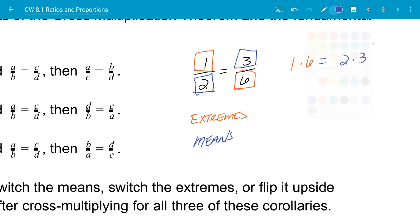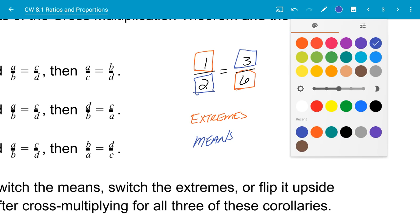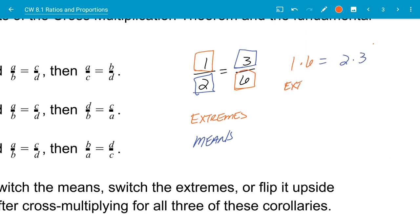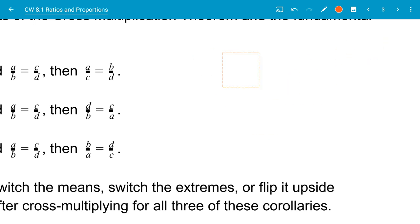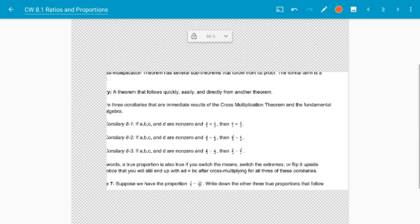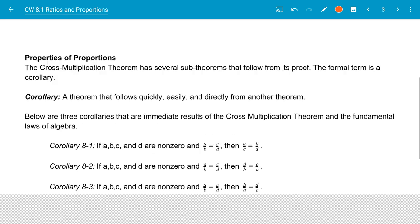And when we take a look and think about it this way, the cross multiplication theorem says that when I multiply my extremes, then that is equal to my means. So there's some things that this cross multiplication theorem allows us to do. And so there's some other theorems that we can get from that one.